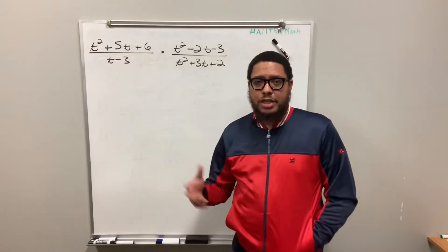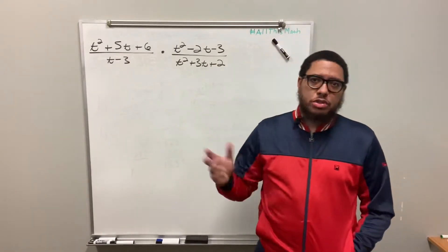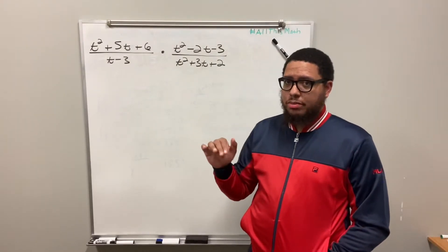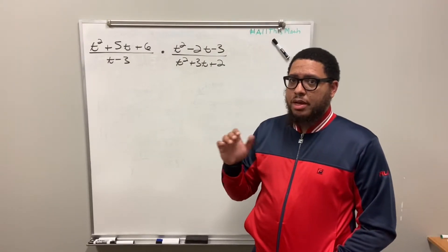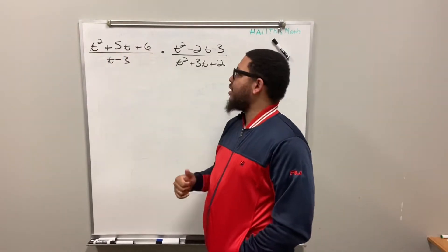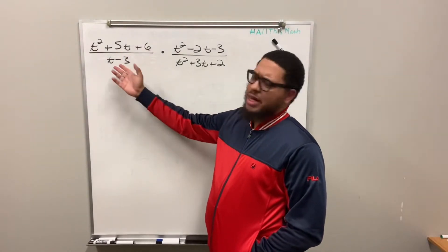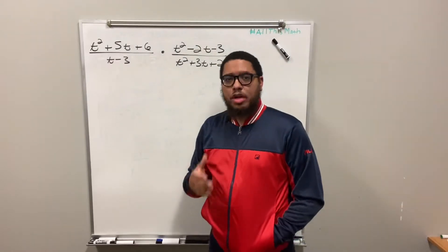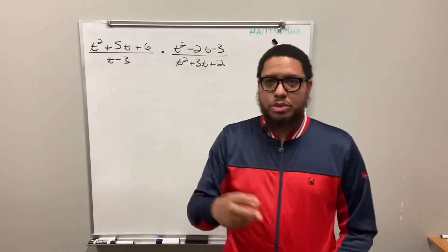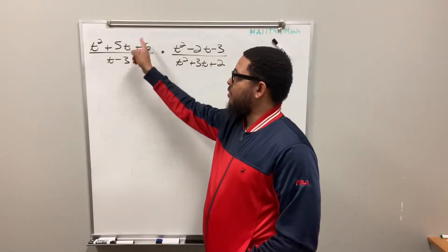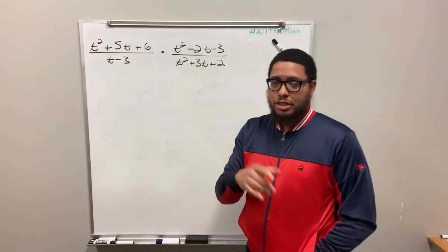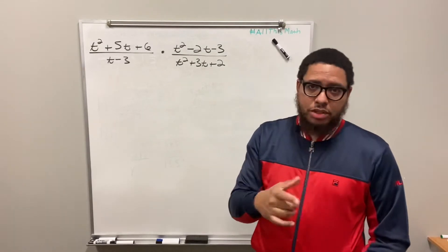Except sometimes your fractions are not like one-half or three-fourths. Sometimes your fractions actually have polynomials in them — polynomials that look like t squared plus 5t plus 6, or t minus 3. t minus 3 is called a binomial because it has two terms, just like a bicycle has two wheels. t squared plus 5t plus 6 is called a trinomial because it has three terms, just like a tricycle has three wheels.